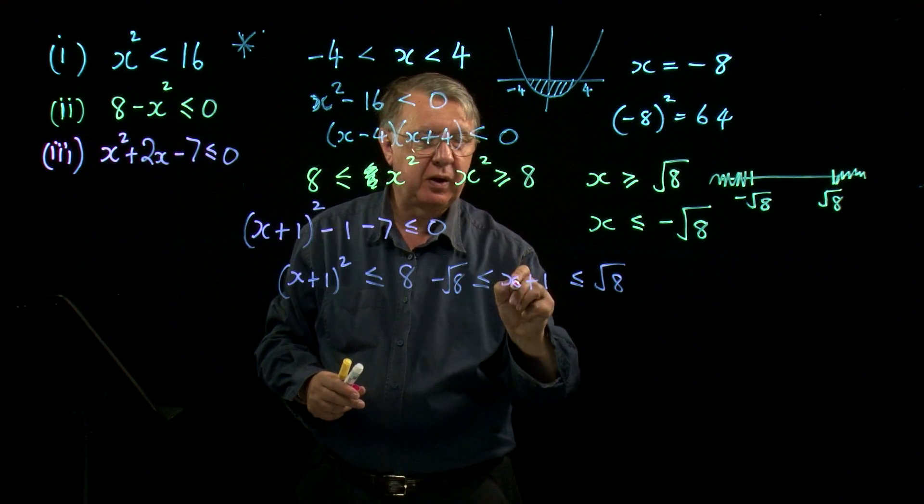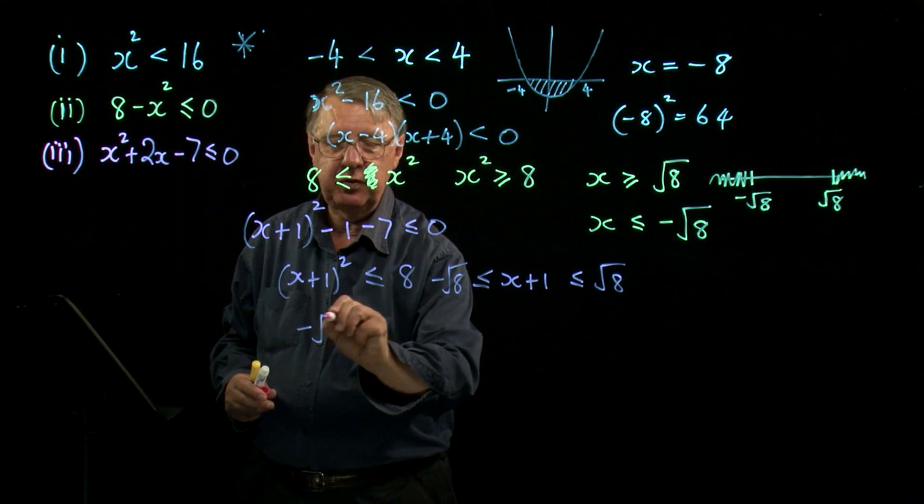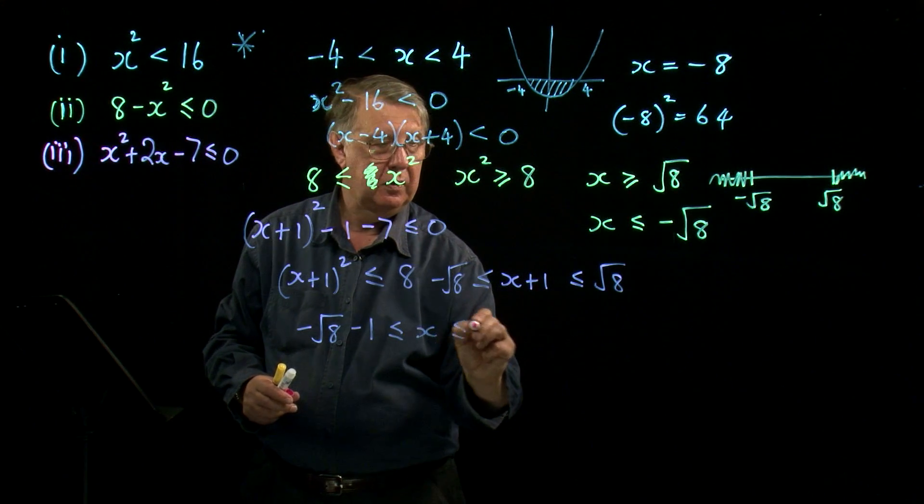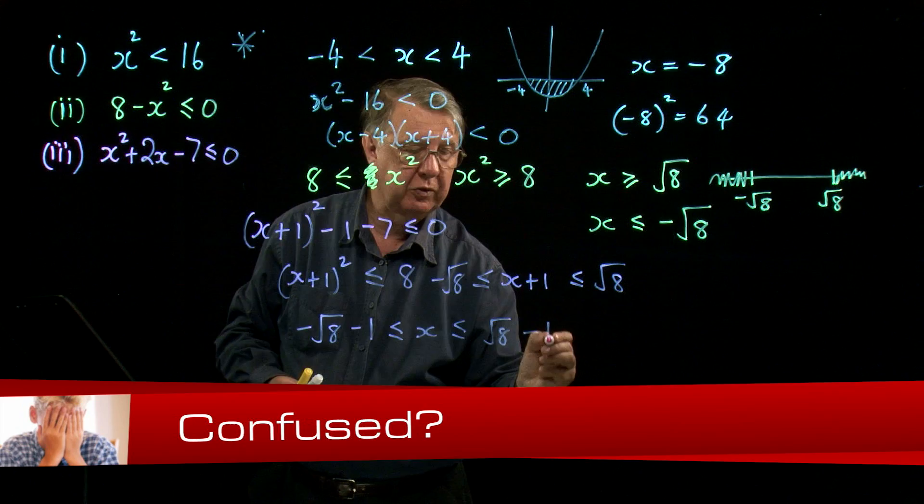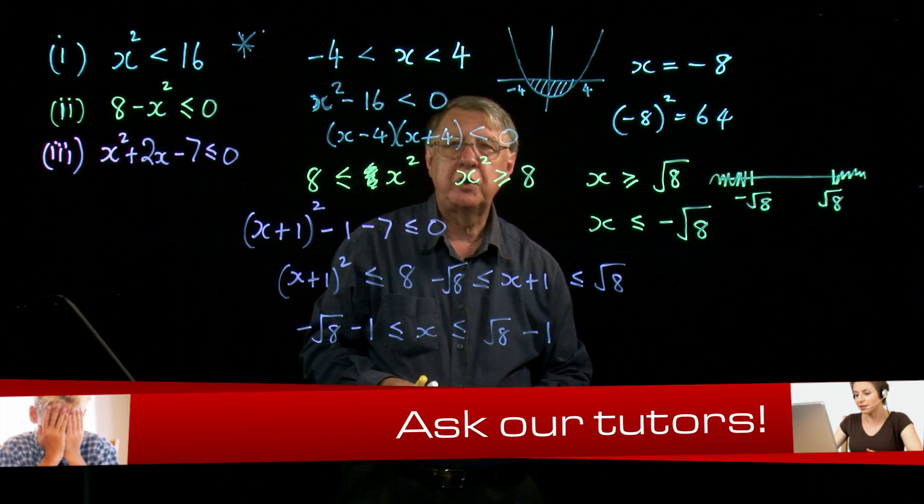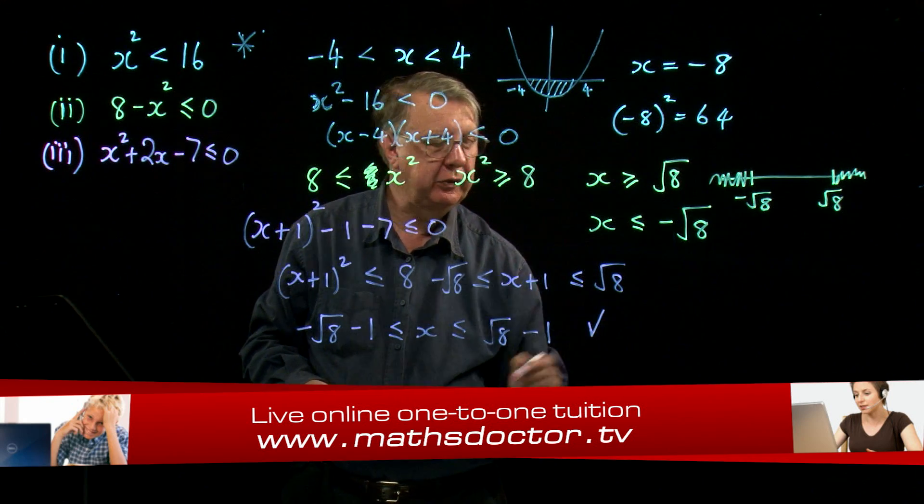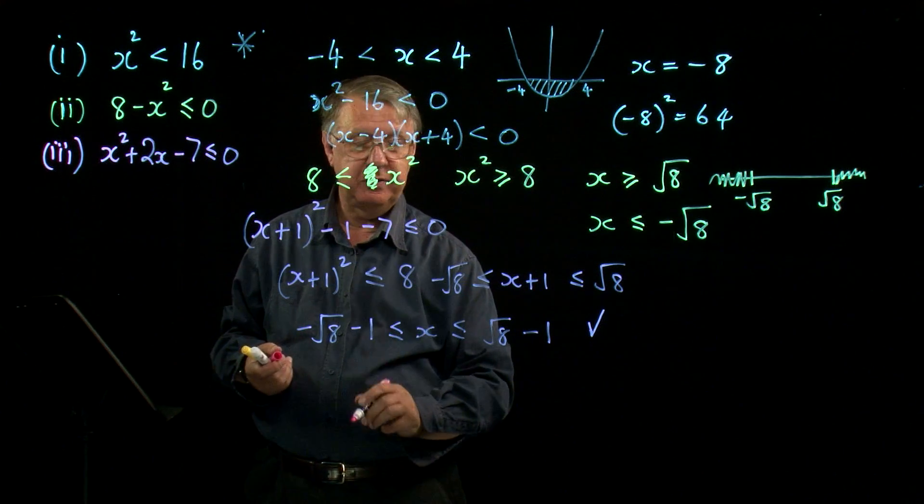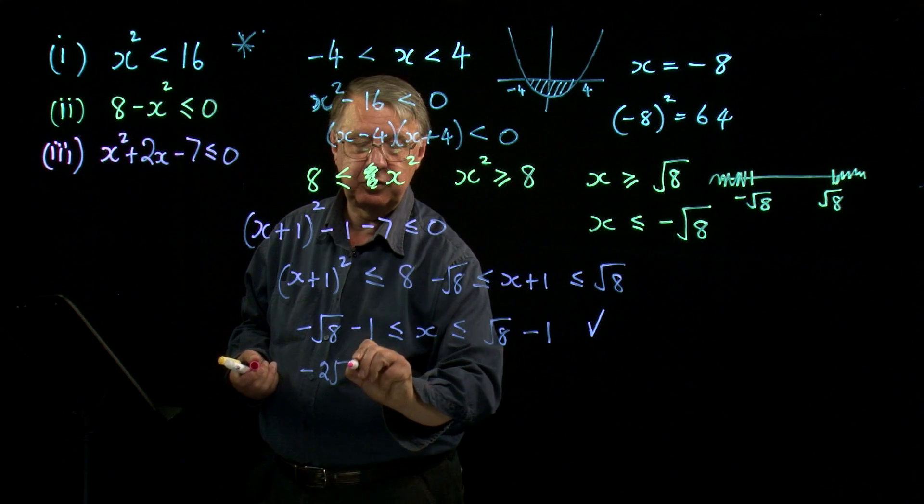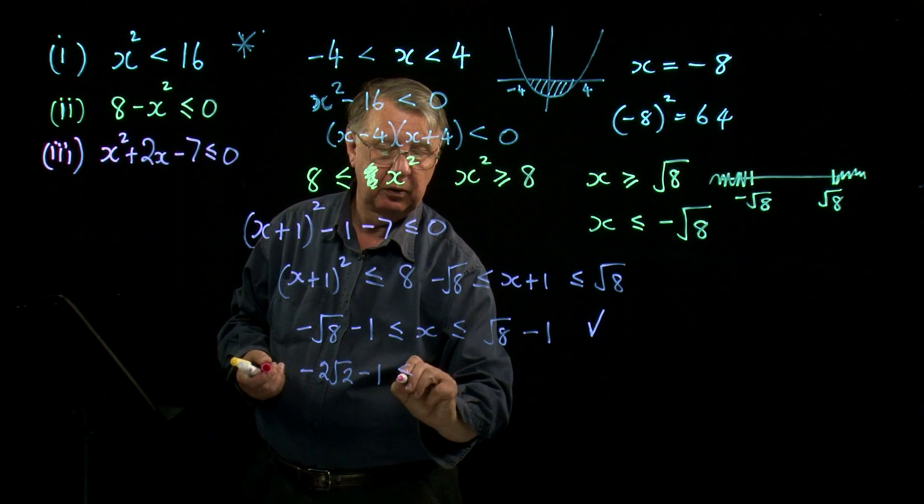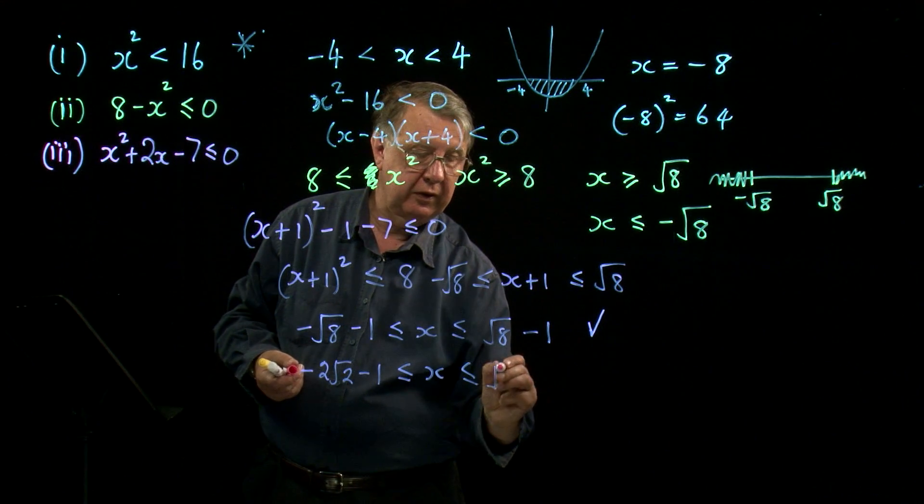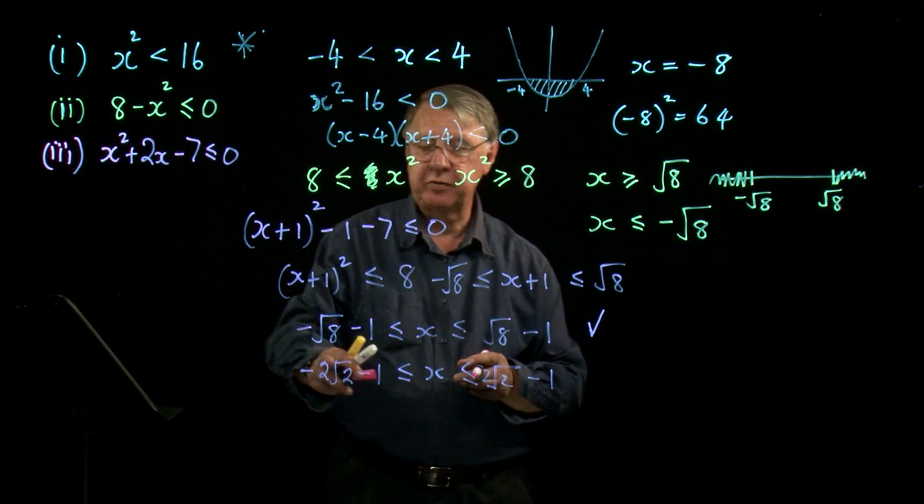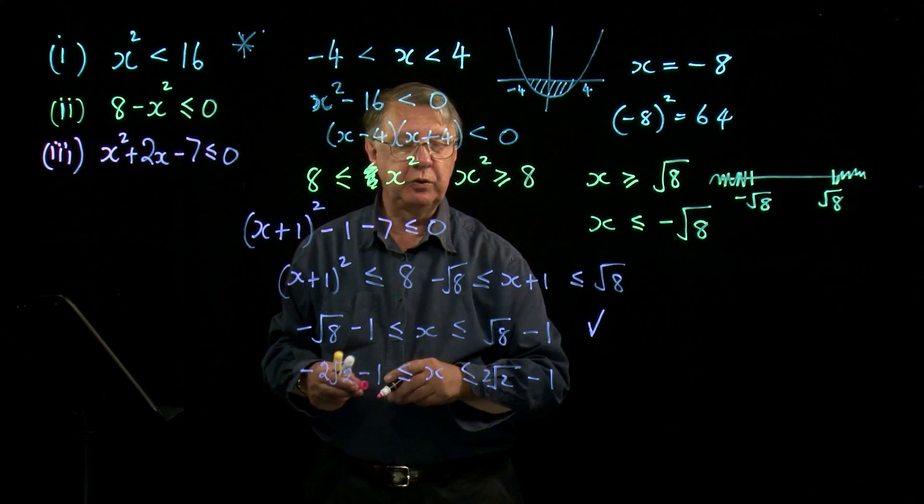Now, take one off each part of the sandwich, and I end up with, let's get this right, root 8 minus 1, which is the correct answer. But of course, you know what will happen, don't you, in the exam? They'll say, simplify your answer. So we mustn't leave root 8 like this. Write it as 2 root 2. So our final answer is x is sandwiched between negative 2 root 2 take 1 and 2 root 2 take 1.